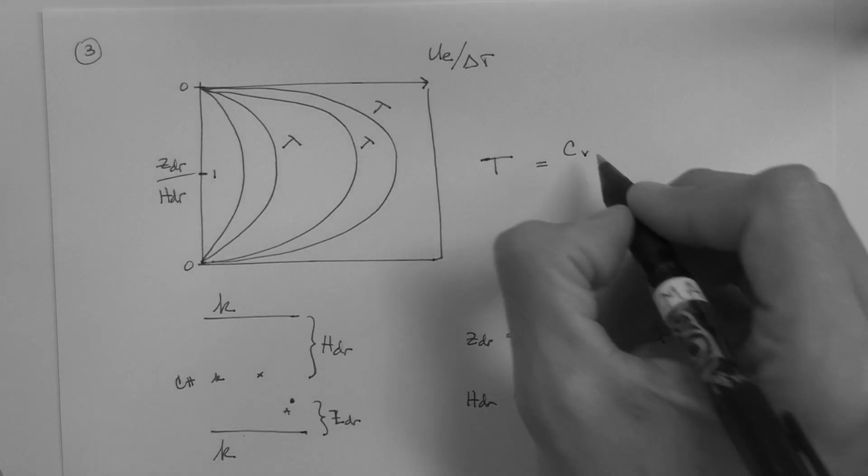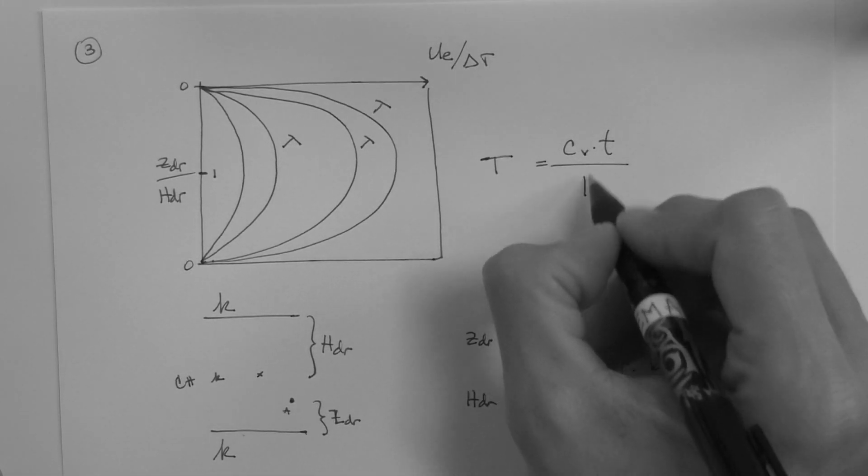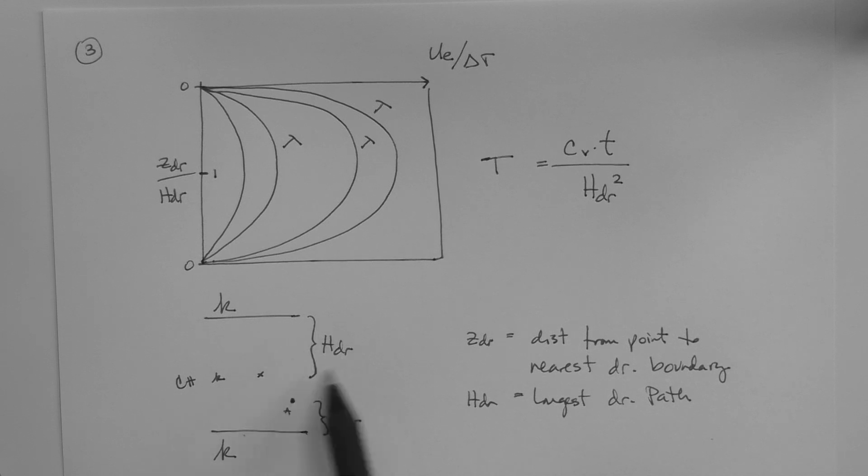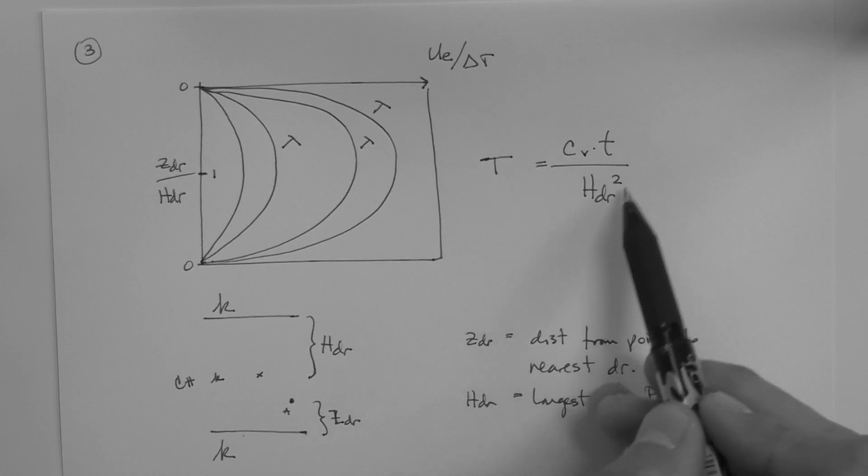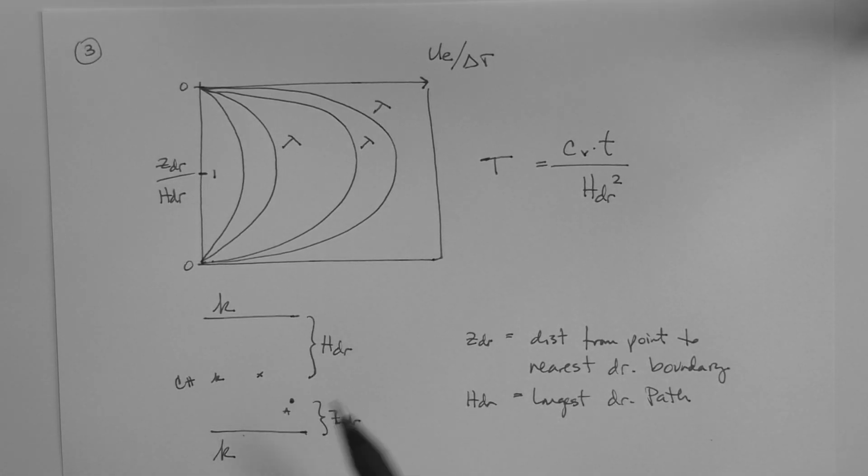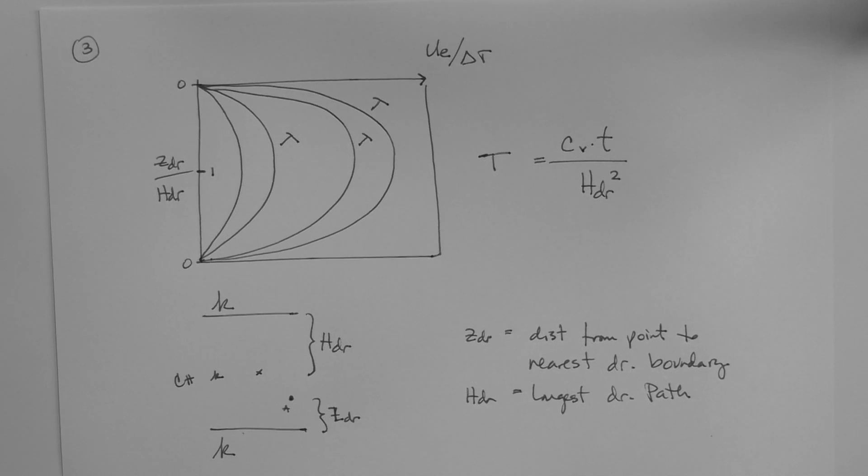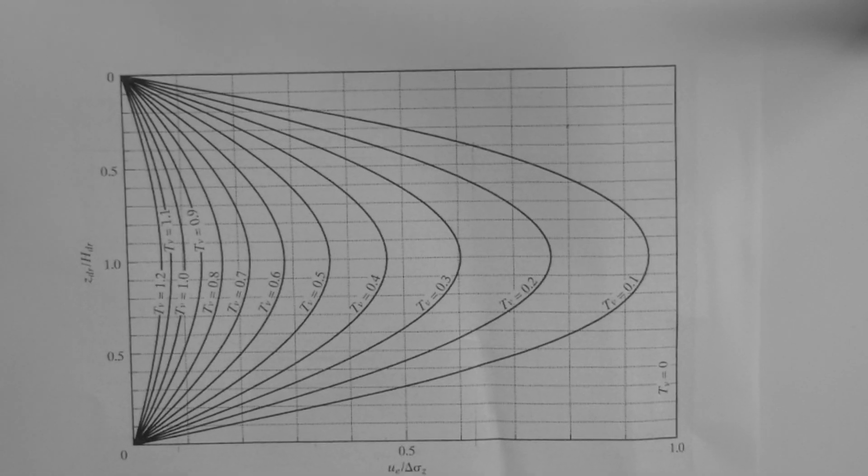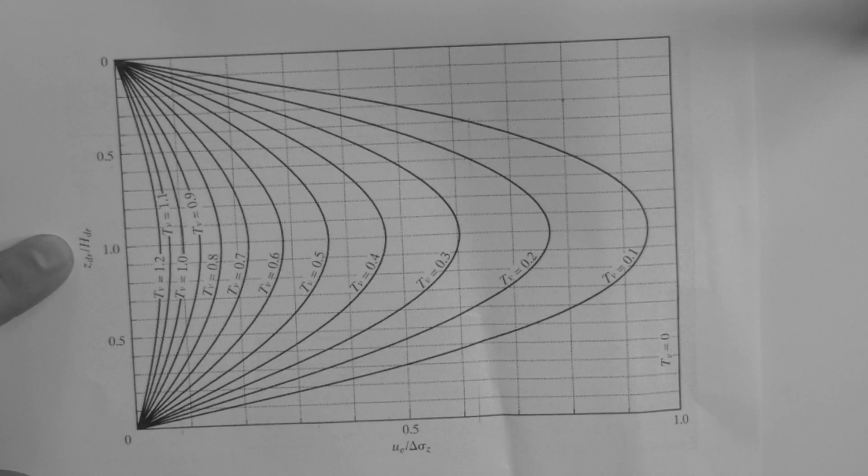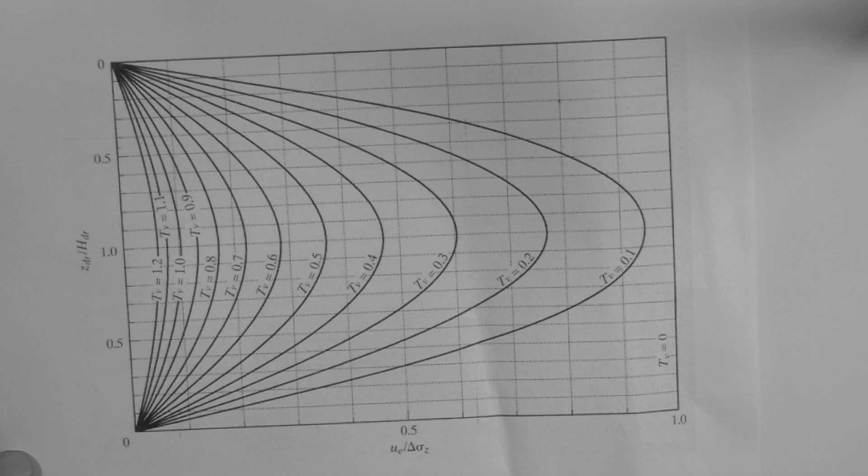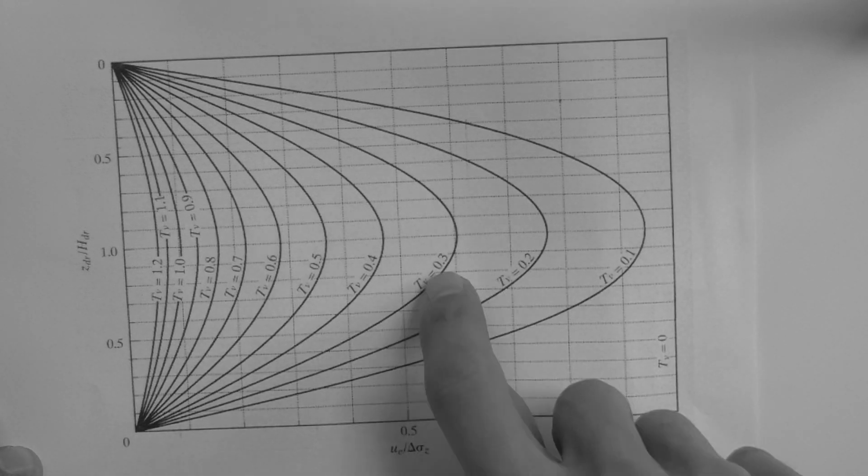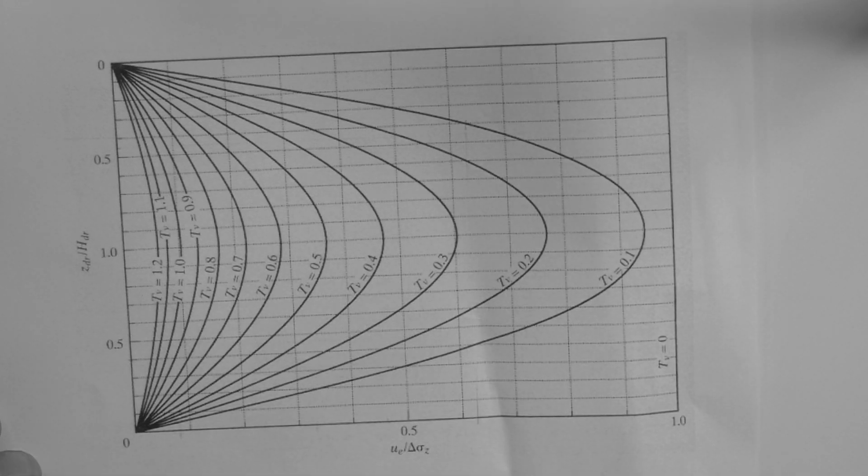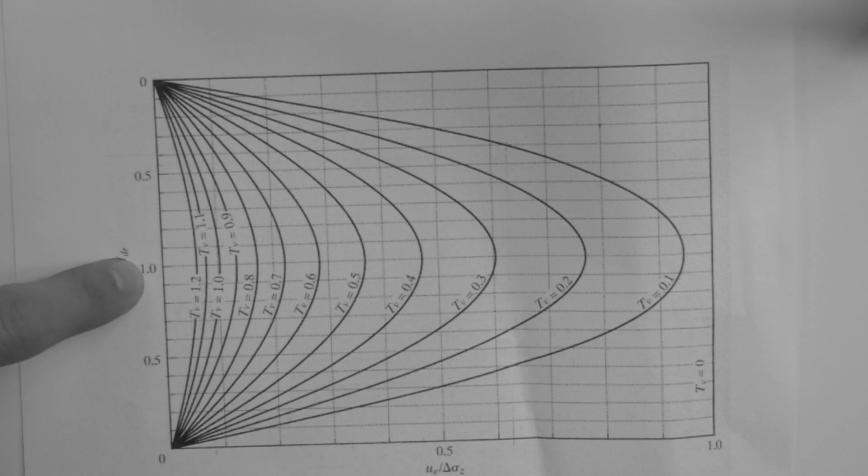And the time factor T captures the soil property that is the coefficient of consolidation, and also the time. CV, coefficient of consolidation, times time, divided by the drainage height, right here, squared. So, this is known because it's a soil property. And this obviously depends on the thickness of the layer, again, and the nature of the drainage boundaries. This is the generic chart. It looks like this. ZDR over HDR down here, excess pore pressure divided by the delta sigma, which is the load. And these are the Ts. T equals 0.1, 0.2, 0.3, 0.4, etc. The y-axis goes from 0 to 1, and then from 1 back to 0.